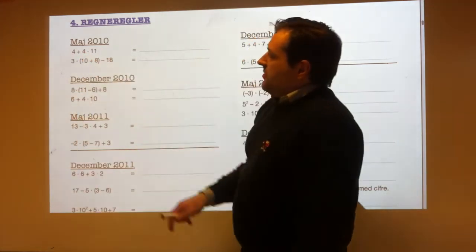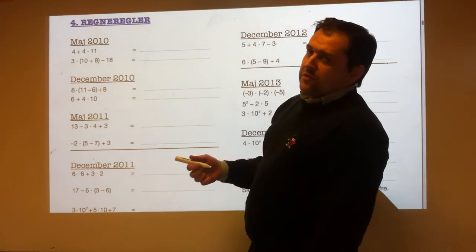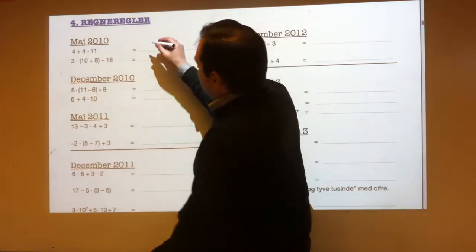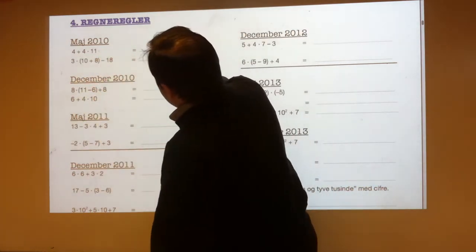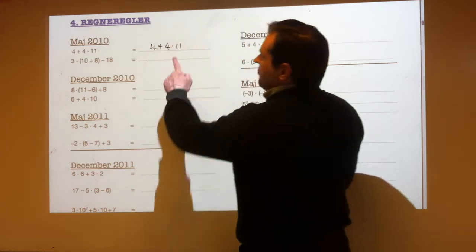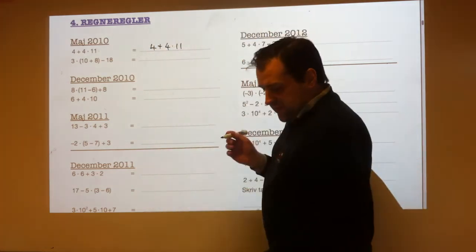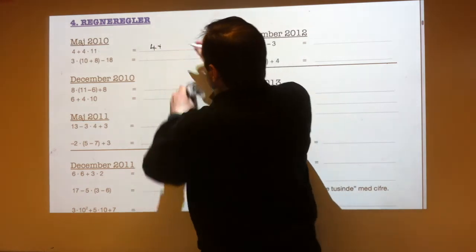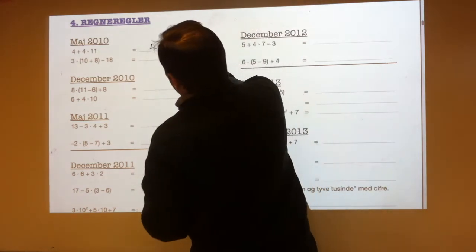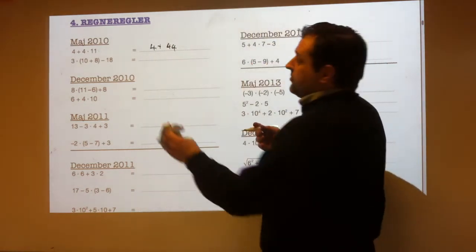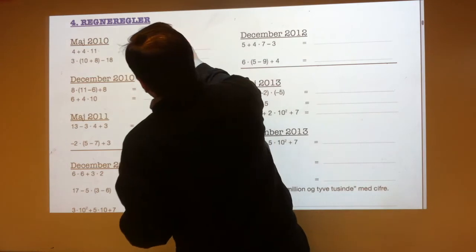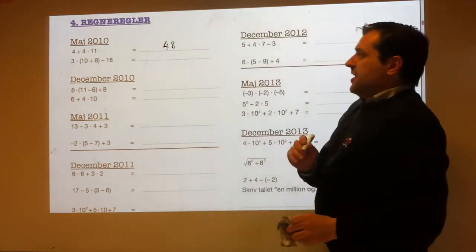4 plus 4 times 11. You've got to do the 4 times 11 first. 4 times 11 is 44. So it's the same as 4 plus 44, which is 48.